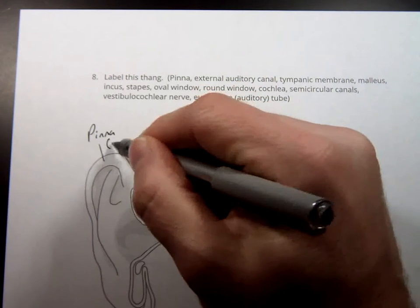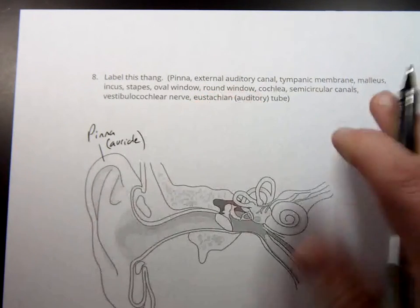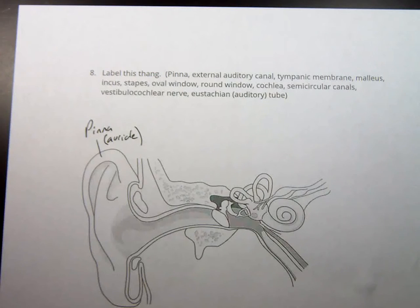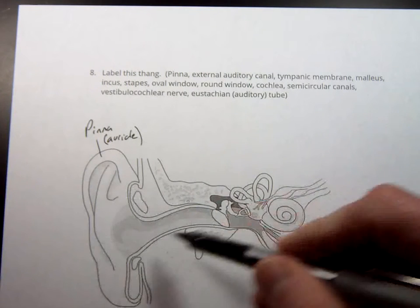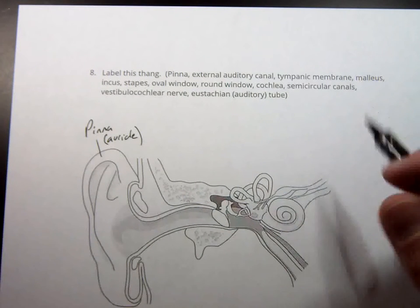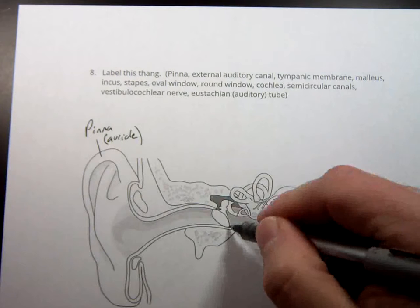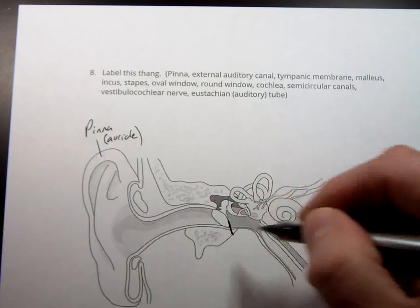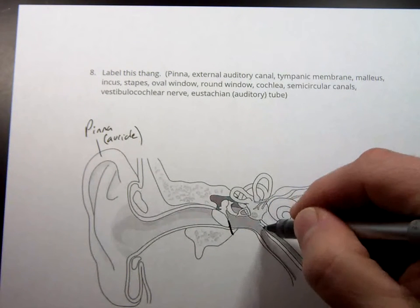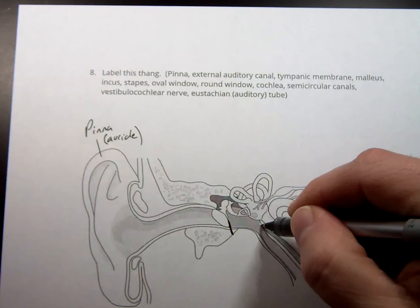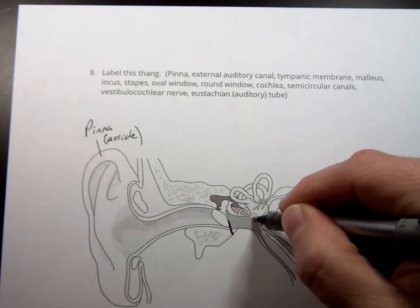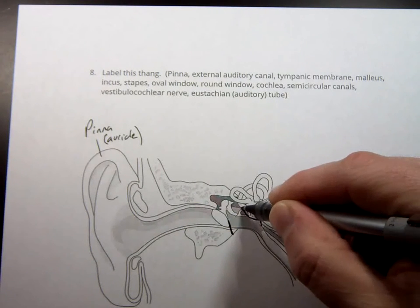Sometimes also called the auricle. An auricle is just a fancy word for flap. But this flap is a little more sophisticated because it helps to funnel sound into this tube right here. Now, I'd like for you to draw a line right here. And then trace a line up this way and around like that.